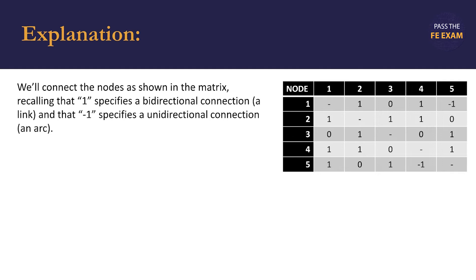We'll start with the first node, number one. We see that there are links to nodes two and four. Those are bidirectional, so we know that those are links.